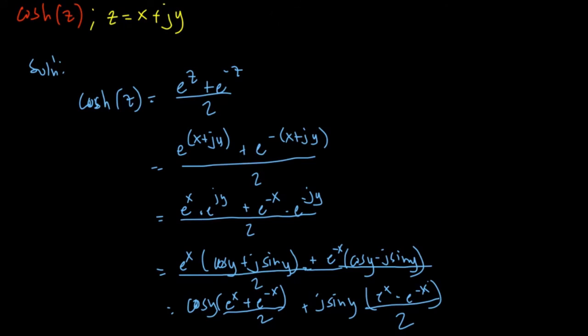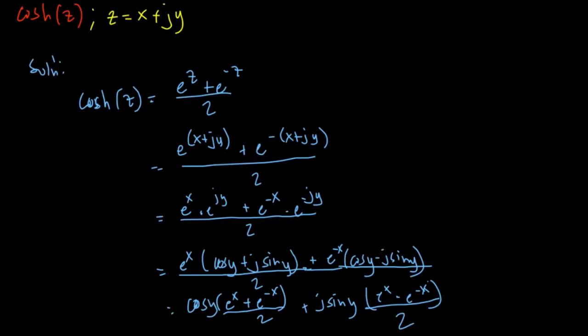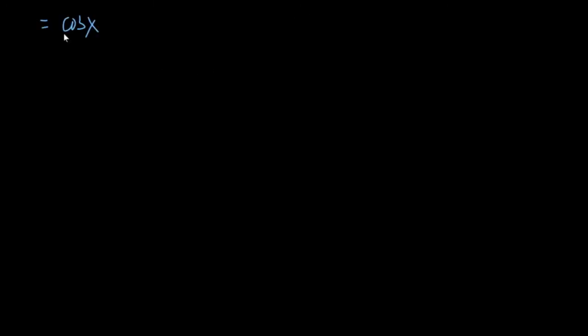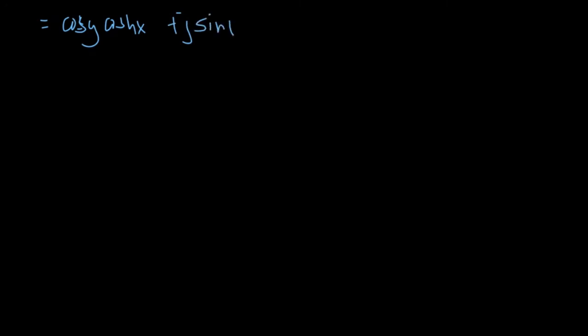So we end up with: E to the X plus E to the negative X is the hyperbolic cosine. We end up with cosine Y times hyperbolic cosine X, plus J sine Y times hyperbolic sine X. This is now the equivalent of the hyperbolic cosine of a complex number Z.